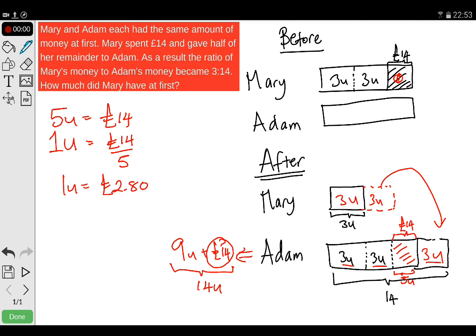The question is, how much did Mary have at first? Mary had 3 units plus 3 units—6 units—plus 14 pounds. Therefore, 6 times 2 pounds 80p plus 14 pounds. So it's going to be 16 pounds 80p plus 14.